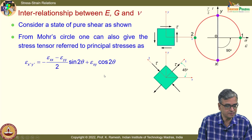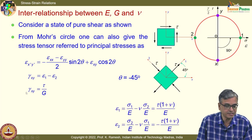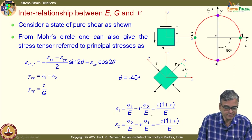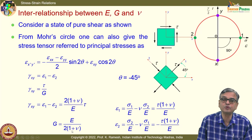From the strain transformation law and the definition of γ_xy based on stress transformation and the Mohr circle of strain, you can write γ_xy as ε_1 minus ε_2. From the stress-strain relation, γ_xy = τ/G. When you substitute, you get the interesting relation G = E / [2(1 + ν)].